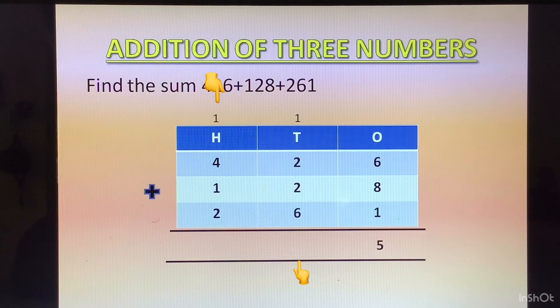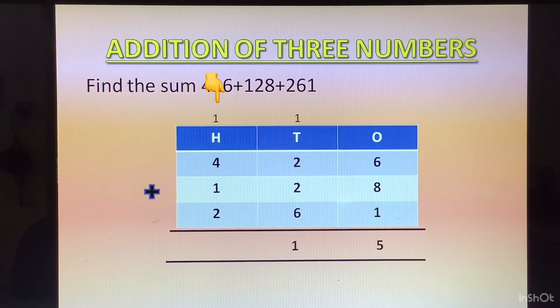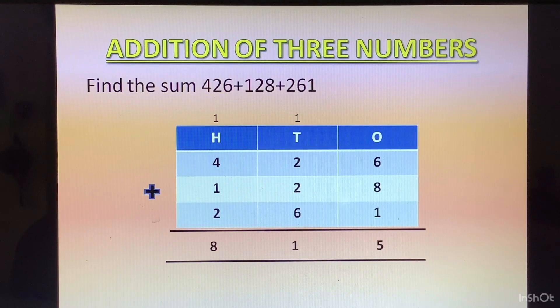1 will come at the bottom of 10's column. Now in the 100's column we have 4 plus 1, 5. 5 plus 2, 7 and 7 plus 1 of the carry, 8. So the answer is 815.